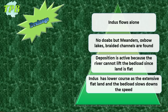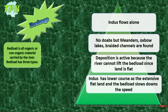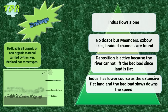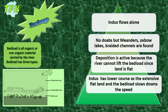The Indus flows in its lower course over extensive flat land, and the bed load slows down the river's speed. Bed load is all organic or non-organic material carried by the river. It has three types: first, dissolved load — all minerals and salts that dissolve in the water; you cannot see it but it can be detected through water testing. Second, suspended load — particles of silt, alluvium, and sand carried along by the drift of the water; being lightweight, the river can transport it over long distances and deposit it in shallow areas. Third, heavy rocks and boulders, which can roll across the river bed and be relocated, especially during flood time.